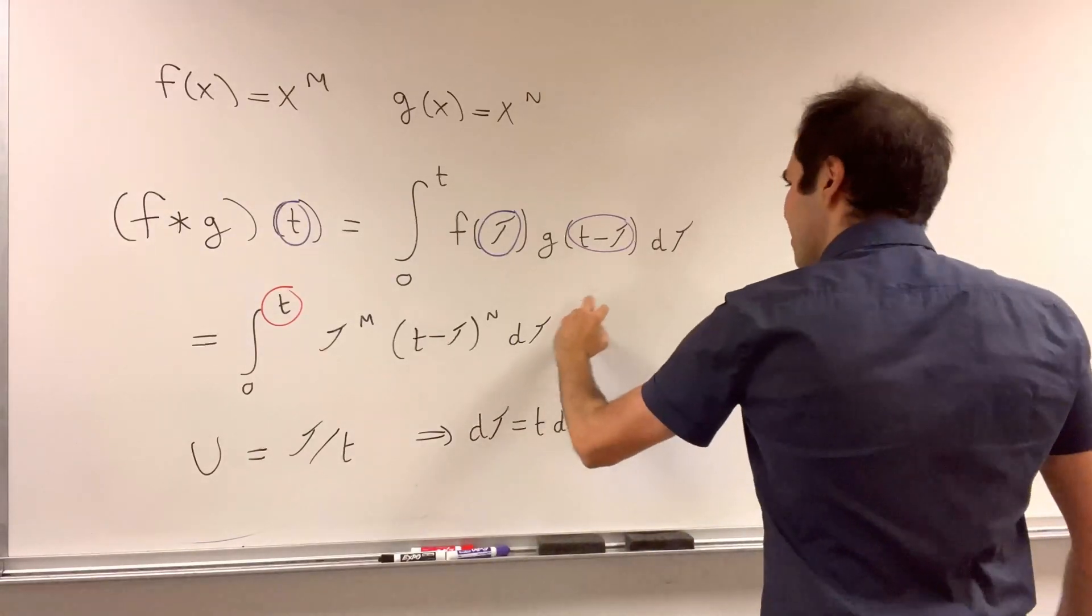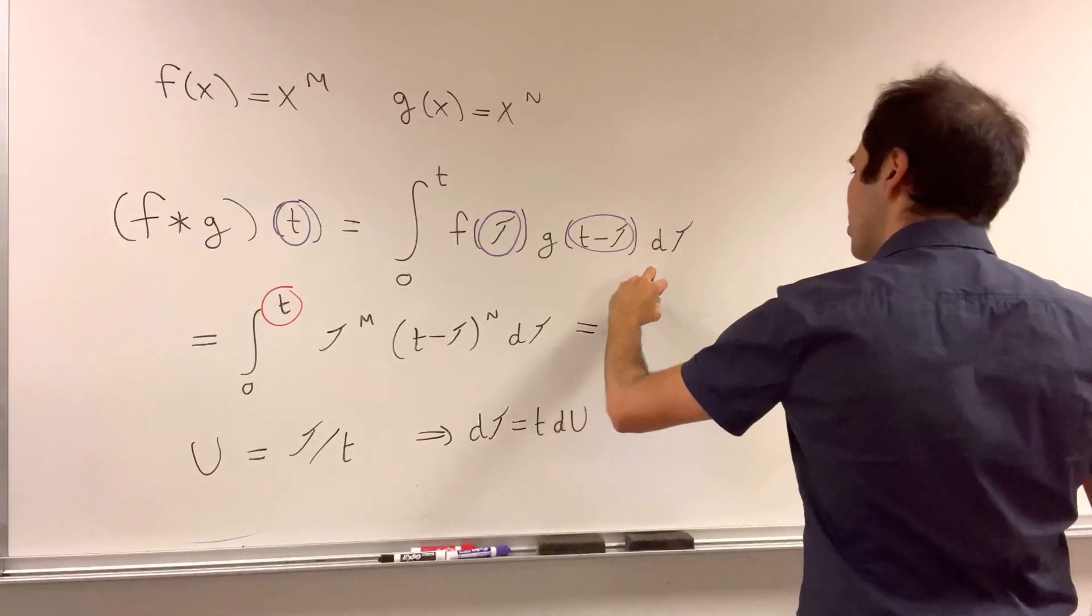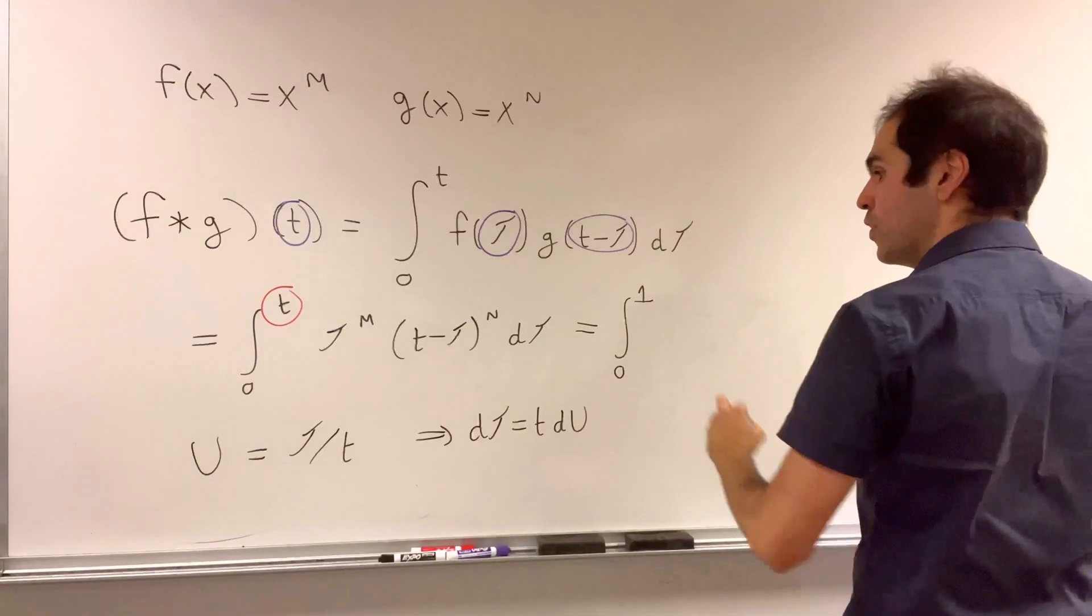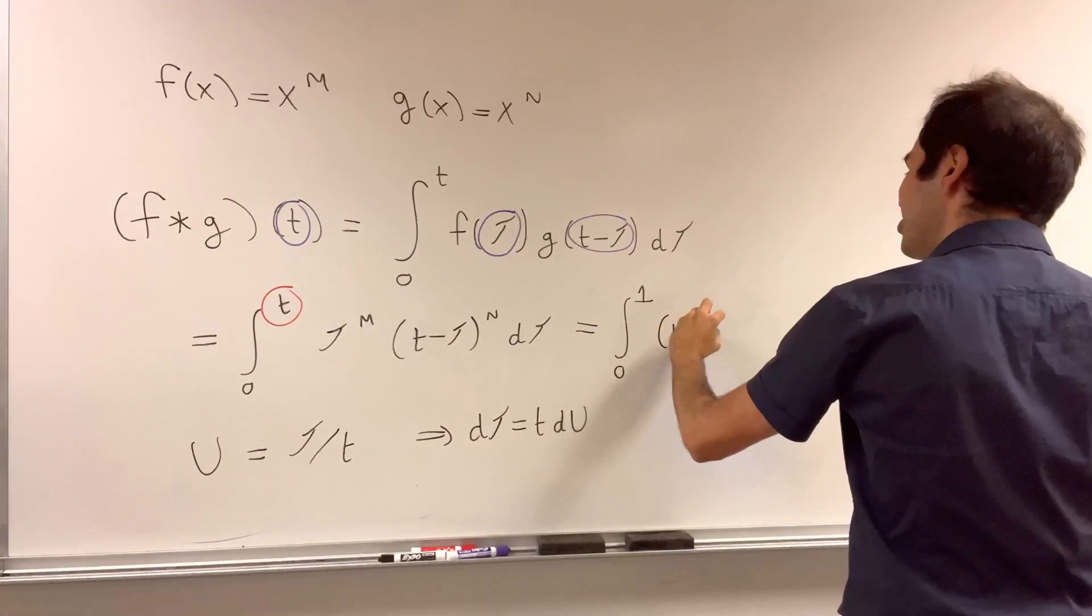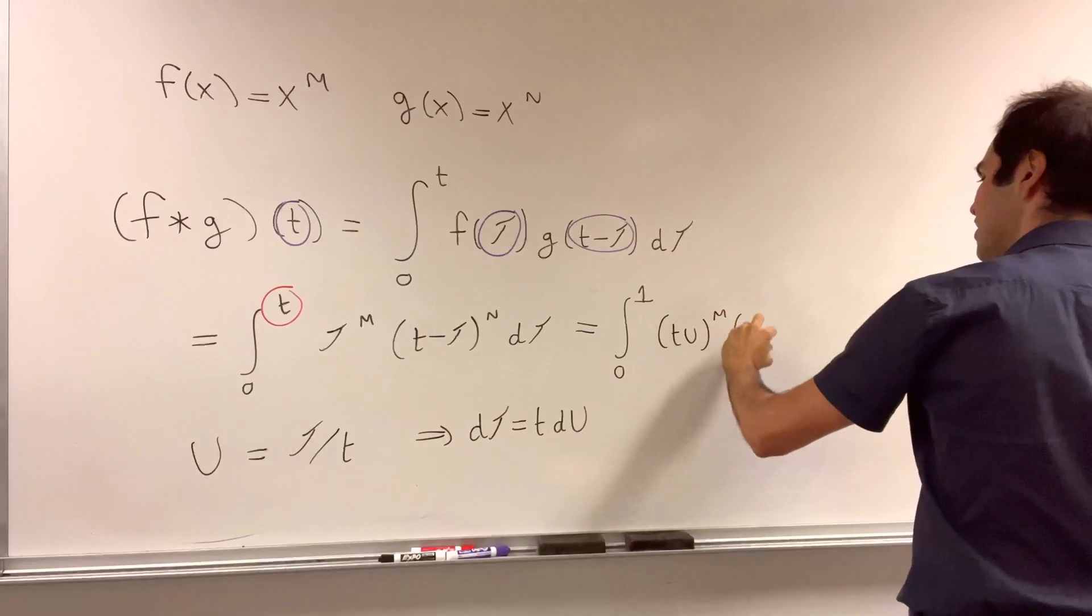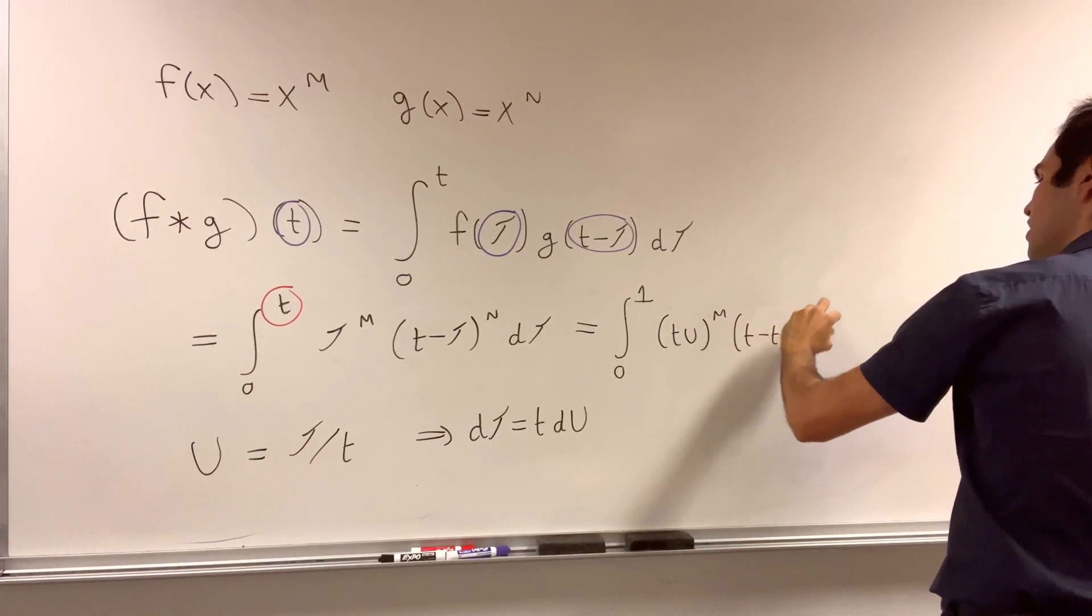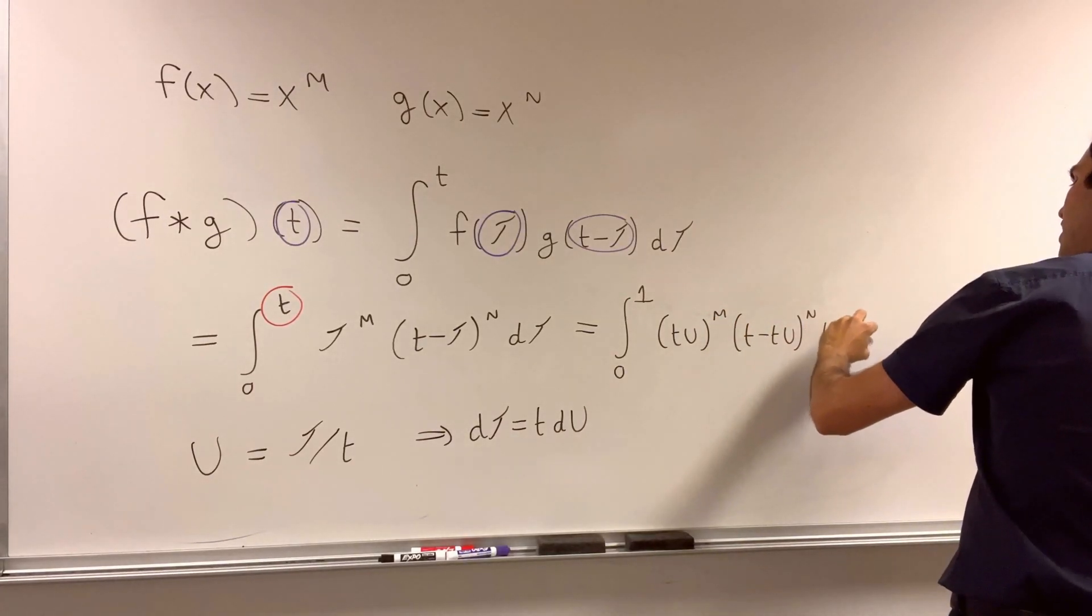And then what we get, the integral becomes integral from 0 to 1, t u to the m, t minus t u to the n, t du.